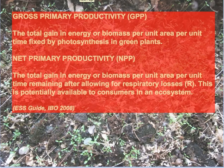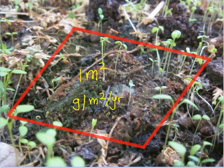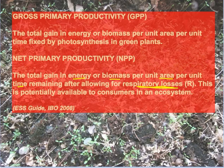Considering the second of those definitions first: the net primary productivity, or NPP, is the total gain in energy or biomass per unit of area per unit of time, after allowing for losses from respiration. Consider a set area of maybe one square meter — if we measure the amount of growth in grams over a unit of time like a year, we would be quantifying the net primary productivity. But have we considered the loss from respiration?